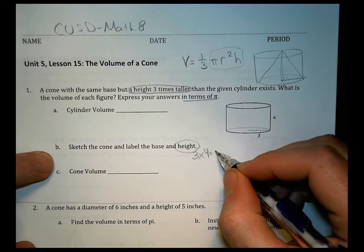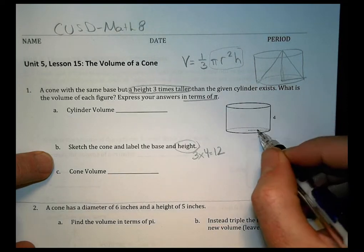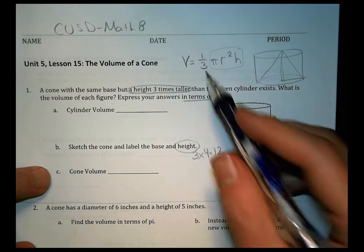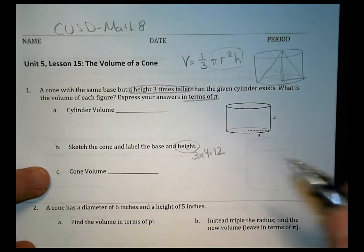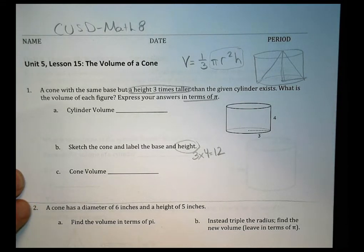So 3 times 4, which is going to be equal to 12. So sketch one with a same radius, same base, but a higher, a greater height. And then use your volume of the cone to figure out what the cone's volume would be. Alright, I'll let you do number one because that's the cool-down.